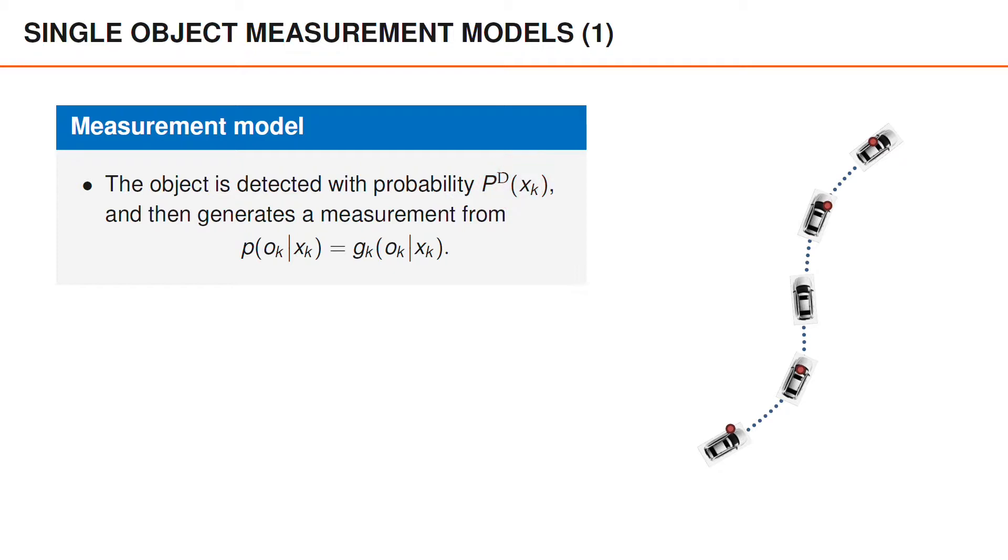We assume that the object is detected with probability p_d. If detected, we will receive a measurement denoted o_k from the distribution p. Similarly to the motion model, it is common to assume that the measurement o_k is a function h_k plus some Gaussian noise with zero mean. If the covariance matrix of the additive noise is denoted r_k, this implies that g_k is a Gaussian density with mean h_k of x_k and covariance r_k, evaluated at o_k. The dimensionality and interpretation of o_k will depend on the sensor that we are using. But you can for instance imagine that the sensor observes the range and angle to the object.